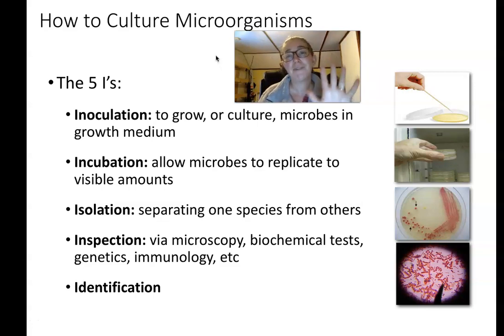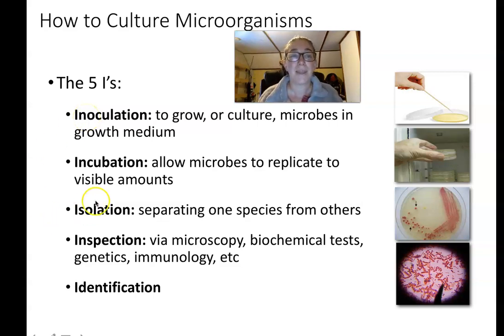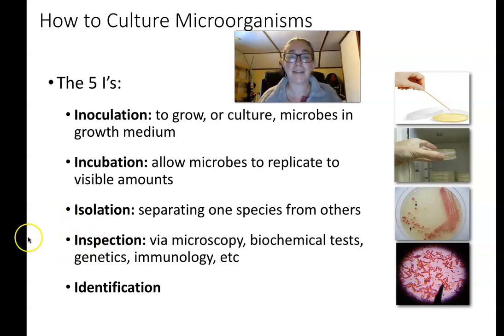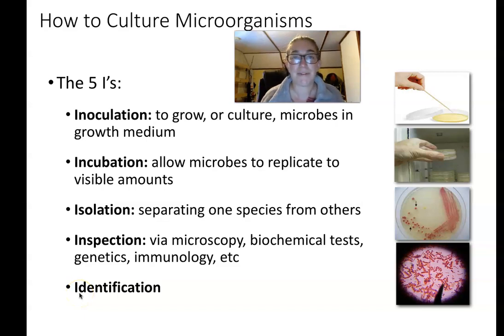There are five different steps to culturing microbes, and they all begin with I — the five I's. The first thing we do is inoculate: that's when we add microbes to our culture media. Then we incubate, letting them grow and proliferate. Hopefully we get isolated colonies that we can examine or inspect under a microscope or with biochemical tests. That will allow us to identify the bacteria, fungus, or whatever the microbe is.